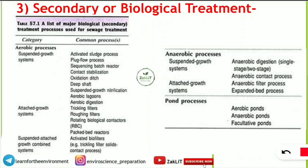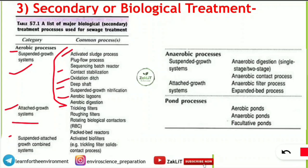Secondary treatment has different categories: anaerobic, aerobic, and pond processes. The aerobic process has three subcategories: suspended growth system, attached growth system, and suspended-attached combined growth system. The suspended growth system includes activated sludge process, sequencing batch reactor, deep shaft, aerobic lagoons, aerobic digestion, and oxidation ditch. The attached growth system includes trickling filters, roughing filters, rotating biological contactors, and packed bed reactors.